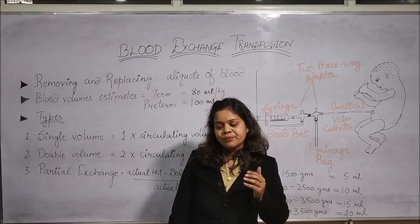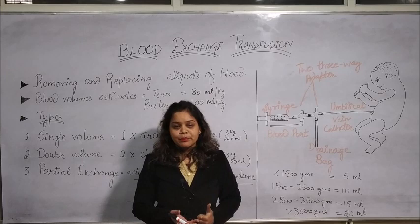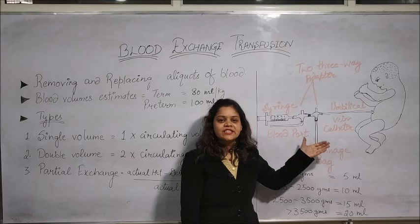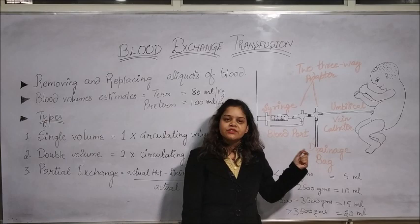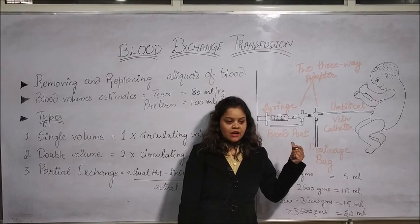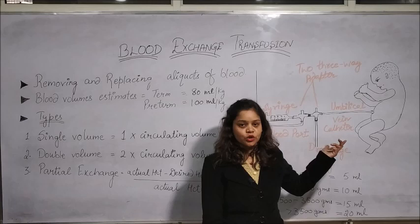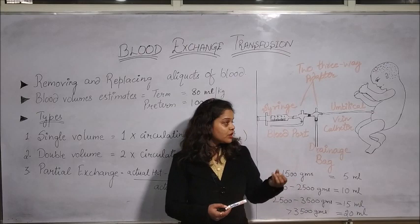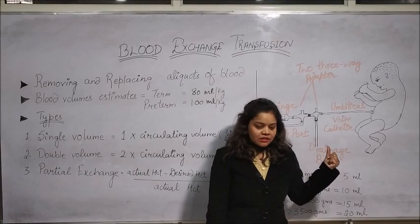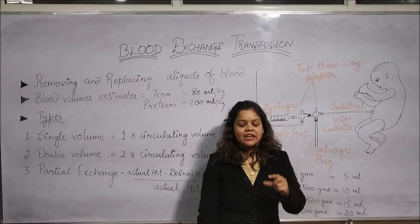While doing this procedure, we check the vital signs of the baby every 15 minutes, including blood pressure and SpO2. After completion of every 100 ml of exchange transfusion, we should give 1 ml of calcium gluconate. Before and after giving calcium gluconate, we should flush the catheter line with 0.9% normal saline, because direct contact of calcium with transfusion blood may cause clotting. Fresh frozen plasma can also be given.